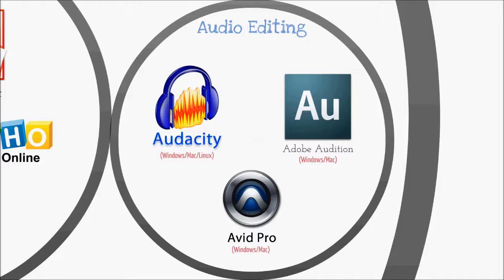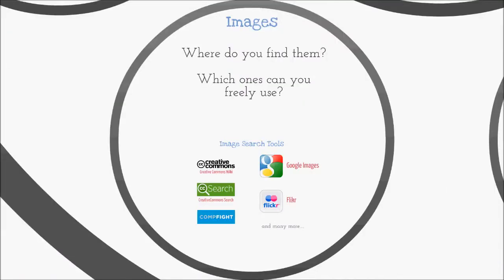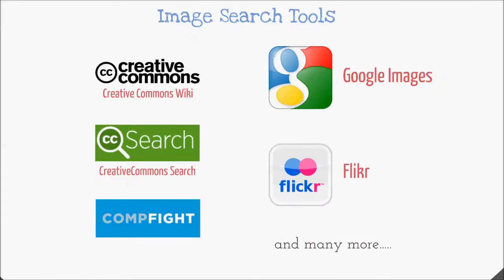Next, you'll want to grab some images for your presentation. Where do you go to find images, and which ones can you freely use? Importantly, there are a number of common licensing arrangements you need to be aware of. Creative Commons is the most popular, followed by the GNU public license, and finally images released to the public domain. Image search tools you can use include Creative Commons Wiki, Creative Commons Search, CompFight, Google Images using the Advanced Search feature, and Flickr, among many more options.